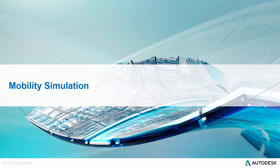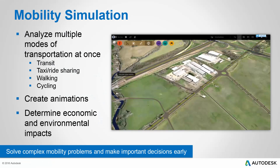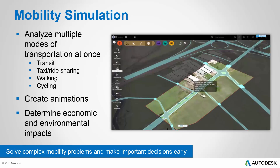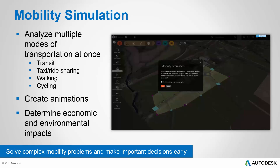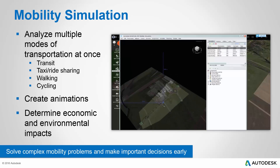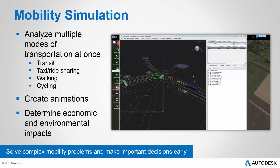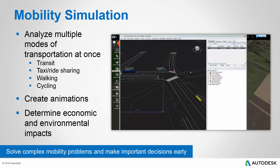Now let's talk about mobility simulation — the addition of an entire feature set in InfraWorks 360. With the mobility simulation tools, you are able to analyze multiple modes of transportation at once, including taxi, transit, ride-sharing, walking, and cycling. With this analysis, you can create animations which allow you to communicate your results with others. This allows you to determine the economic and environmental impacts of changes in a part of the city where multiple modes of transportation are used for people to travel into, out of, and within the city — solving complex mobility problems and making important decisions early in the project.